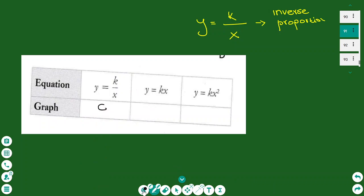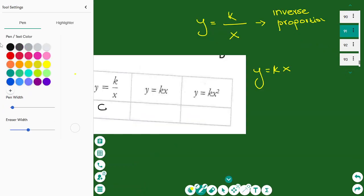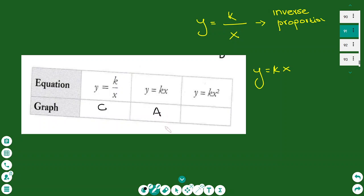For the second equation Y equals KX: if I increase X, Y also increases. The right graph is A, because A represents a straight line with a constant slope — a constant change — compared to the other graphs. So the answer for the second equation is graph A, because the gradient is fixed and it is a straight line.